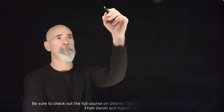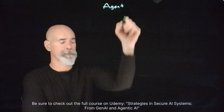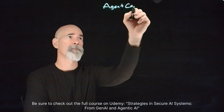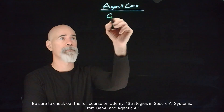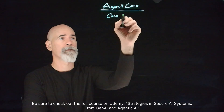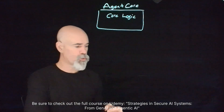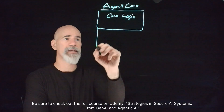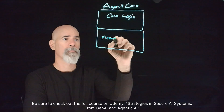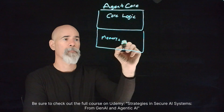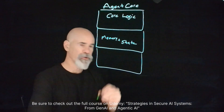Let's draw out a little bit of an architecture diagram here. We'll start out with the agent core. Underneath the agent core, we're going to have this core logic. Underneath that core logic, we're going to have memory and state. And underneath that, we're going to have execution and tools.